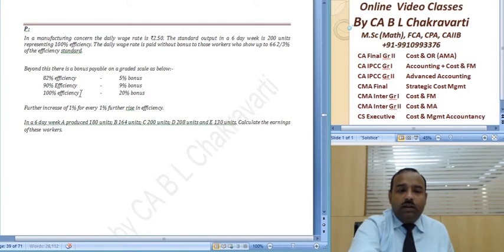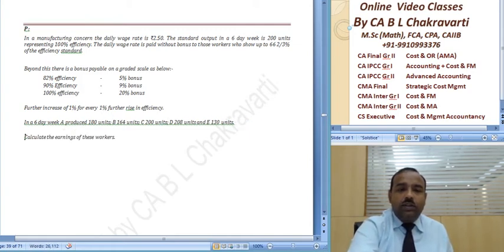In a six day week, worker A produces this, B produces this, C produces this, D produces this and E produces this. Calculate the earning of these workers.